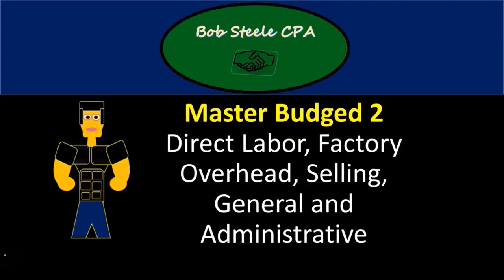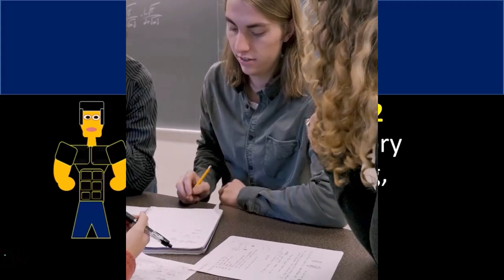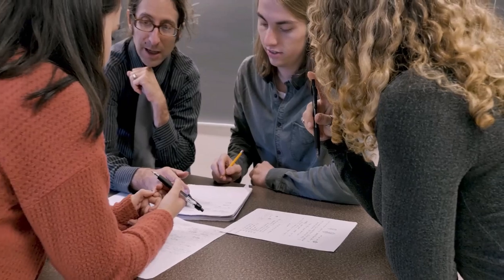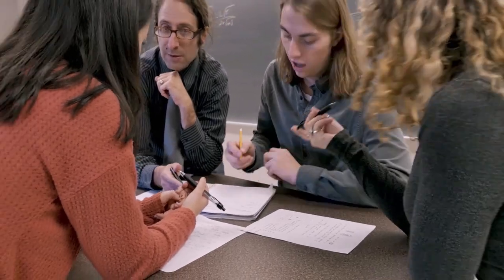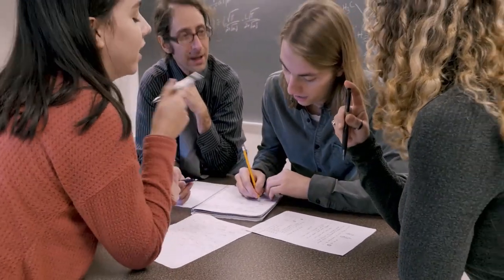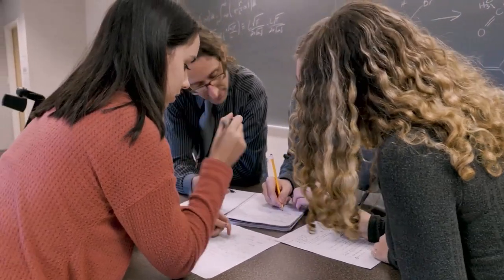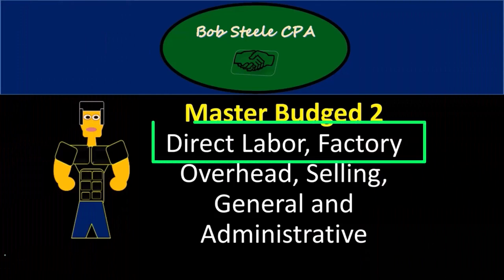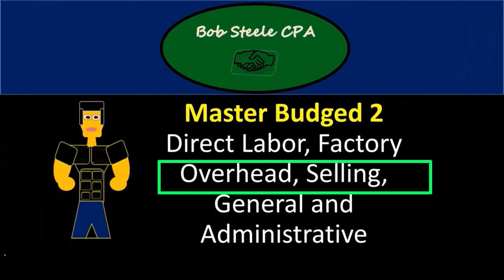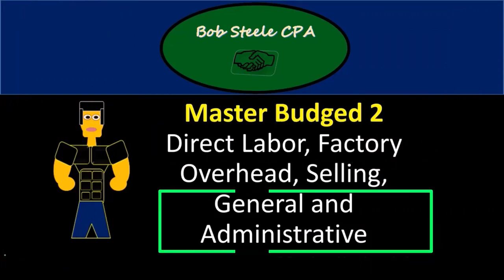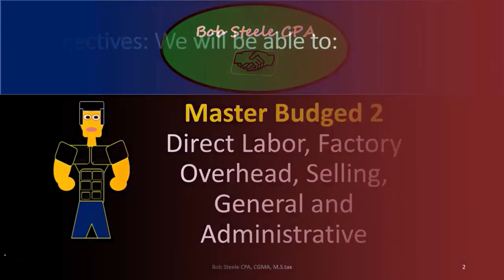Hello, in this lecture we're going to continue on with the master budget. We started the master budget last time, so if you haven't seen the first part of this, you may want to look at that first and then move on to the second piece of it. The second piece here includes direct labor, factory overhead, selling, general and administrative parts of the master budget.